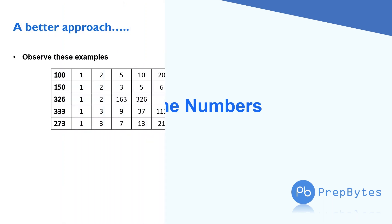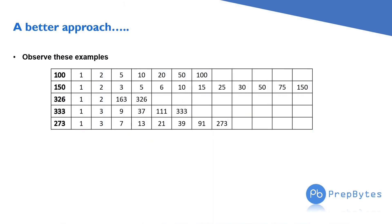Let's begin with a better approach. Observe these examples — pause the video if you like. This is 100 and these are the factors of 100. This is 150 and these are the factors of 150. This is 326 and these are the factors of 326. These are not prime numbers, obviously, but think about something in terms of factors.